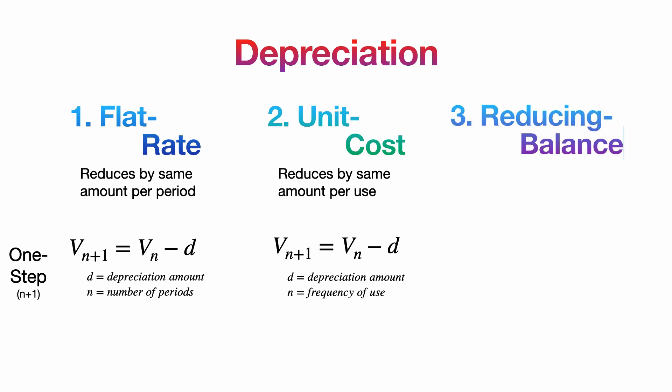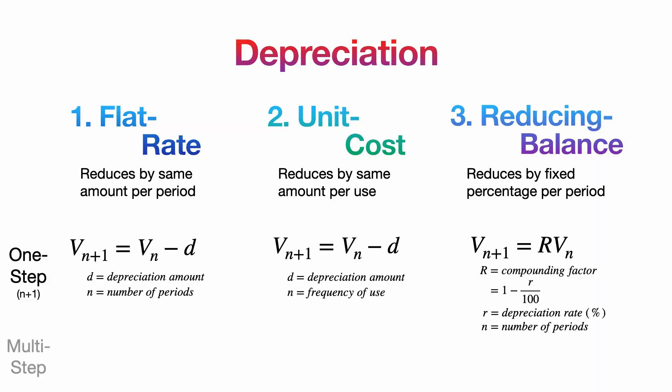The recurrence relation is the same as flat rate depreciation, but instead of n representing the number of periods, it represents how many times the asset has been used instead. The third is reducing balance depreciation, where the asset's value depreciates by a fixed percentage. We can use this recurrence relation to find the asset's value, where the compounding factor is less than one since the asset goes down in value. Now at the moment we're only able to predict just one step ahead, but what if we wanted to predict more than one step ahead? Well, I got you, we can just use these formulas here to do that.